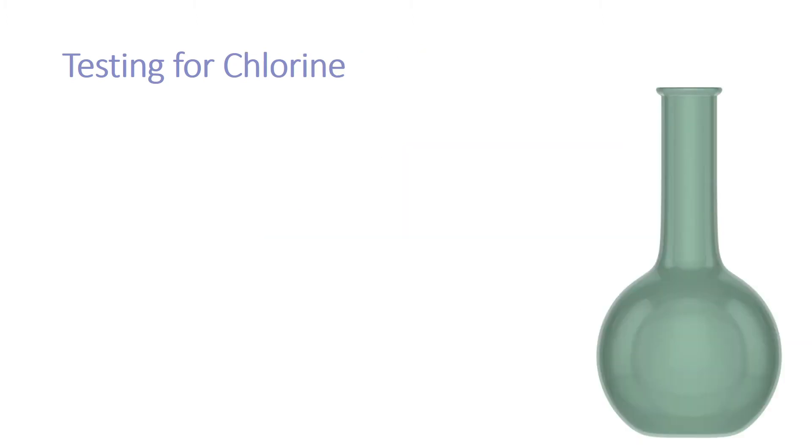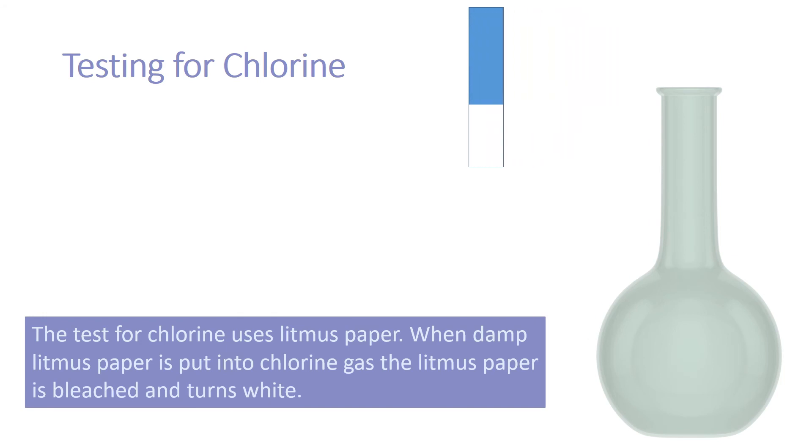To test for chlorine, use damp litmus paper. When damp litmus paper is placed into chlorine gas, it is bleached and turns white.